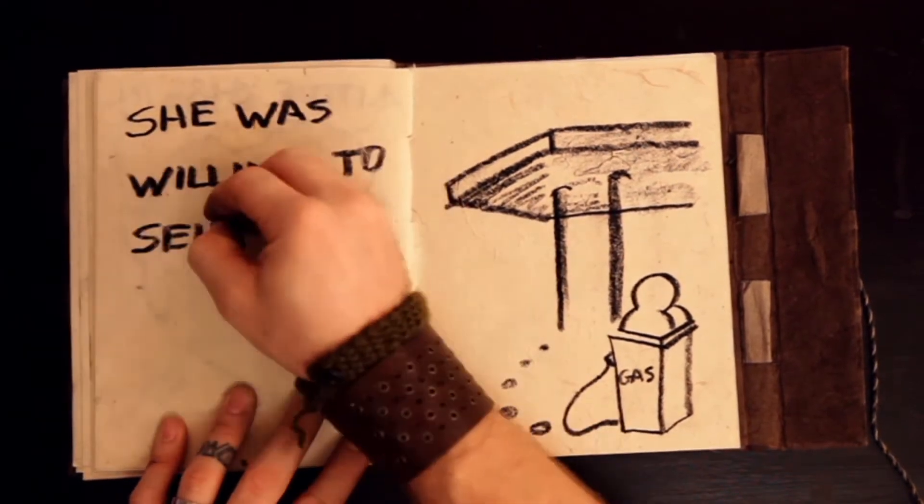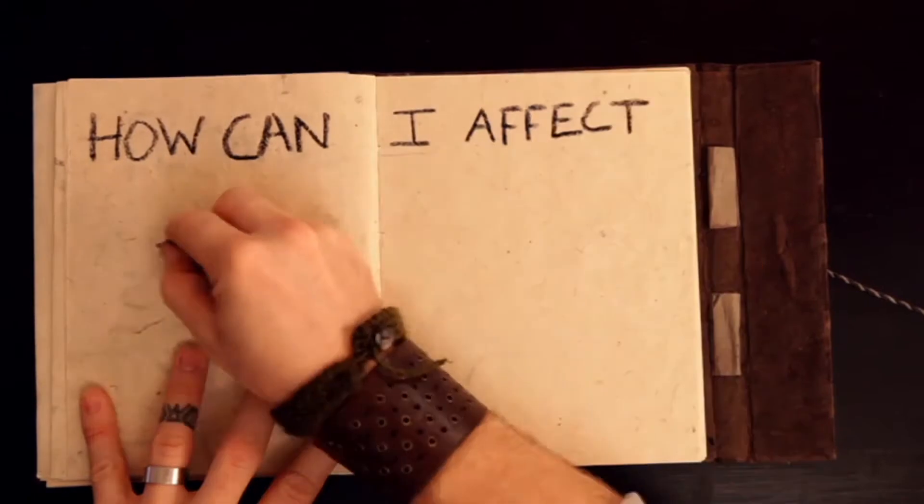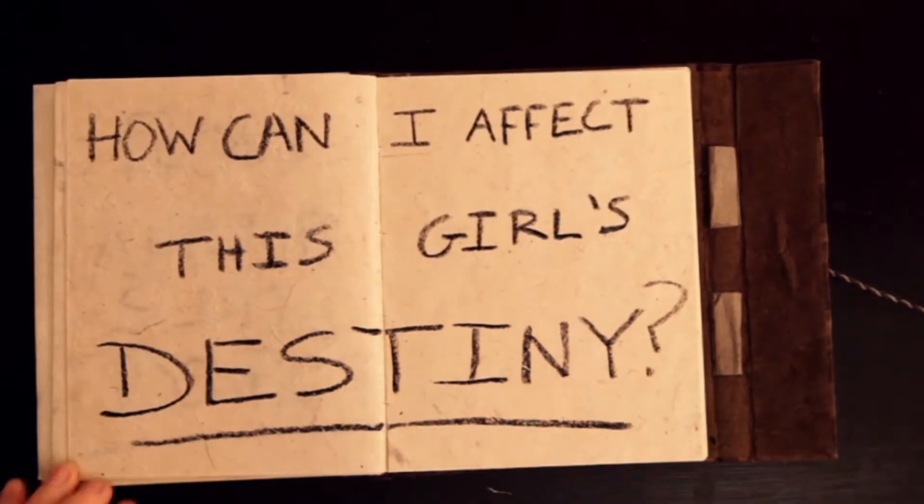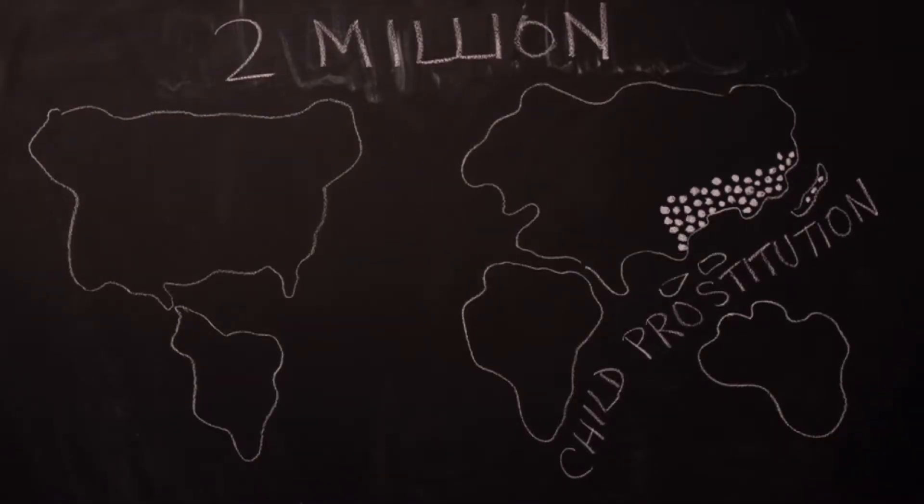She was willing to sell herself to me for $2. How can I affect this girl's destiny? There are 2 million victims of child prostitution around the world.